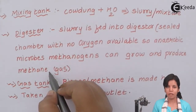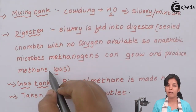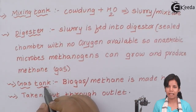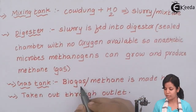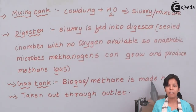Basically in this closed chamber, methanogens eat the cow dung and feed on water, and in the process as a byproduct they form methane gas. In the gas tank, methane gas is formed, produced, and kept. Biogas is stored here ready for use.